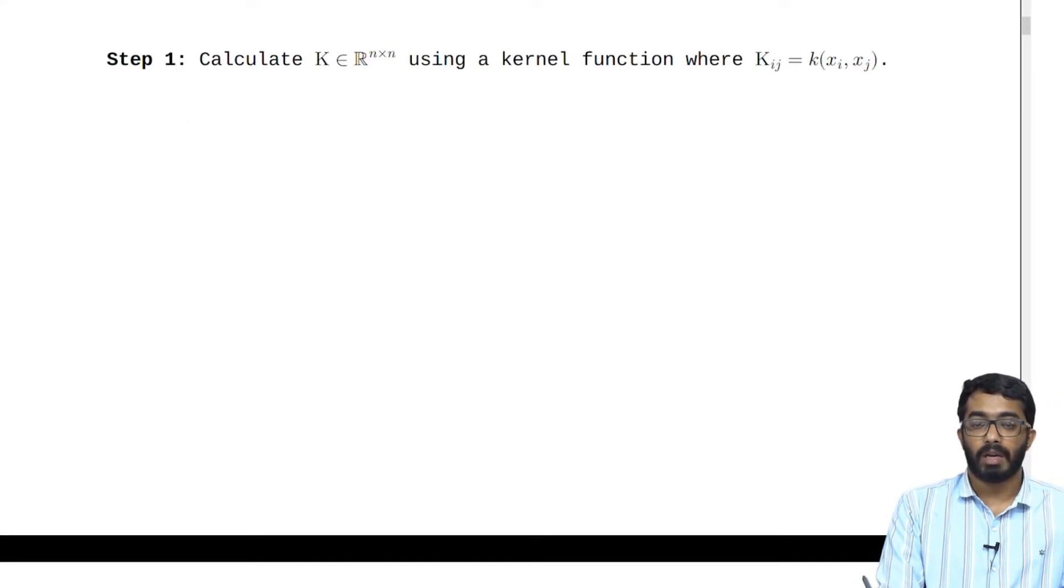Now how do we apply kernel PCA on this data set? Step one is to calculate K of dimension N cross N using a kernel function where K_ij is equal to K of X_i X_j.